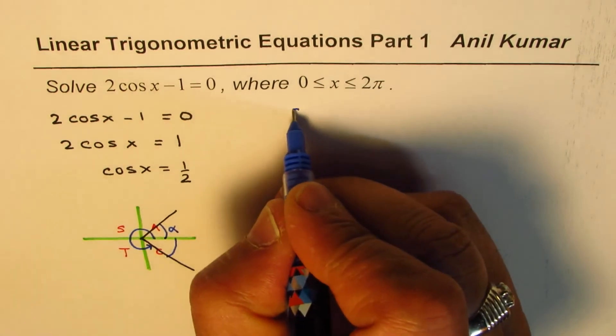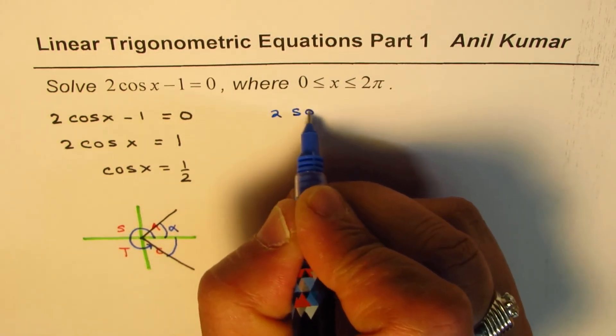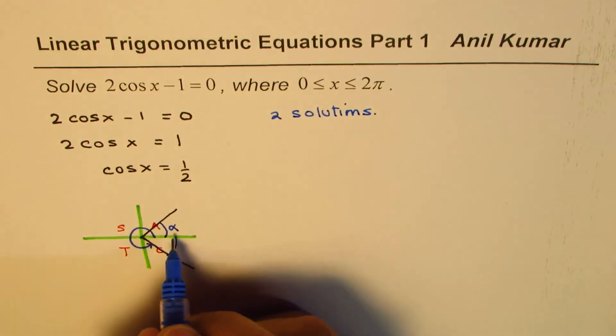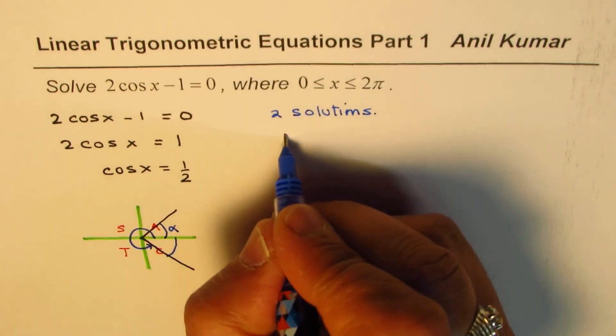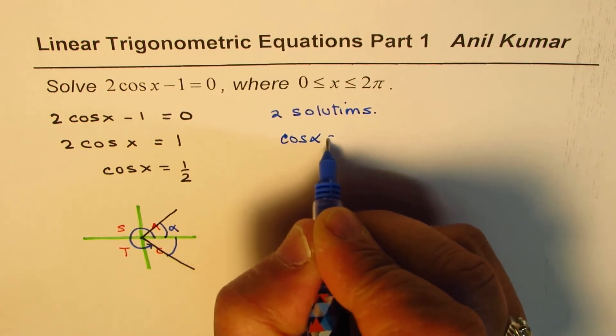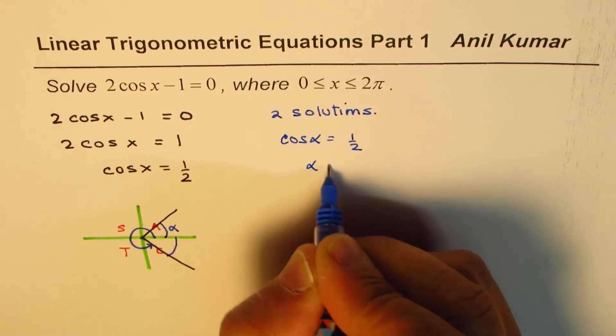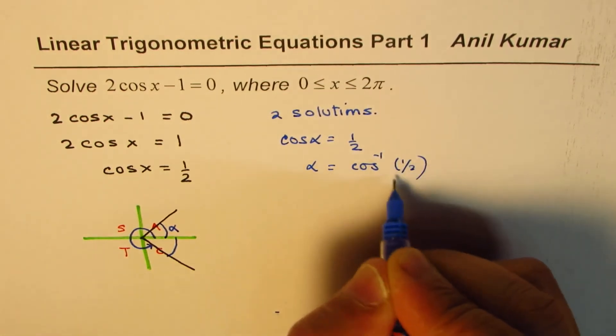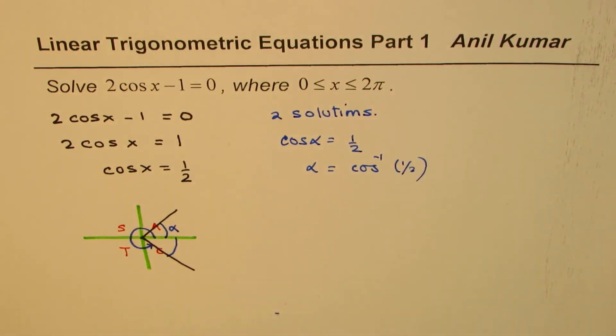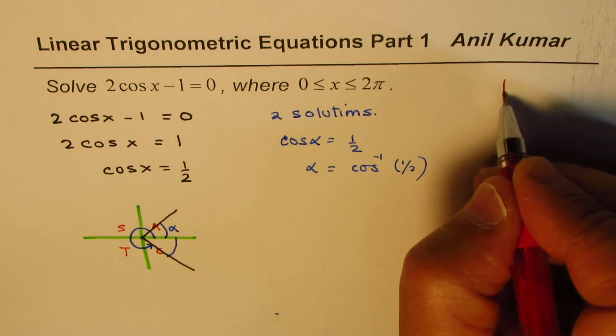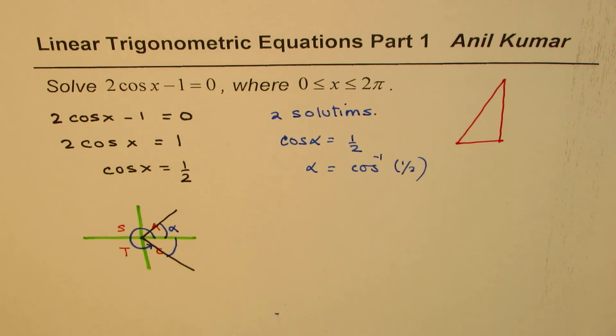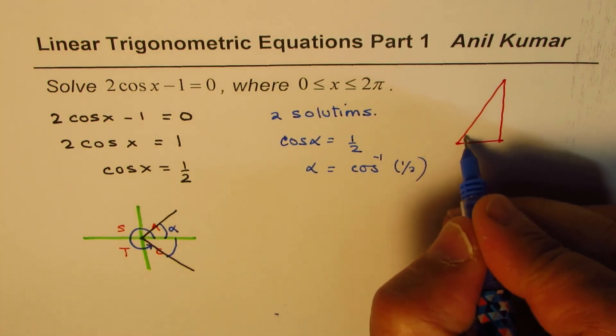Now here we know we have 2 solutions. And one of them is the same as the related acute angle. So we could use cos(α) = 1/2 and we know α = cos inverse of 1/2. We could use calculator and we can also use special triangles.